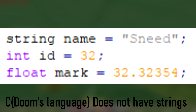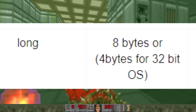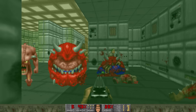A data type is a way data is classified in programming. For example, a string, which are words or series of letters; an int, which is an integer, a typical number. There are different kinds of numbers as well, such as float for precise decimal numbers, and long for long numbers.